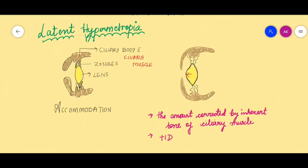Let us talk about latent hypermetropia first. To understand latent hypermetropia, we should know about the basic principle of accommodation. In a normal eye, we have a crystalline lens connected to the ciliary body using certain processes called zonules. The ciliary body, which is a part of the choroid, consists of a muscle called the ciliaris muscle. Whenever we want to look from far to near,